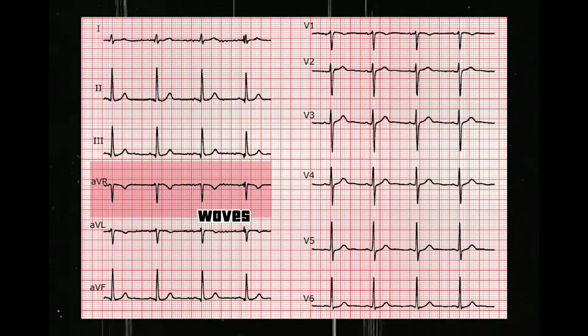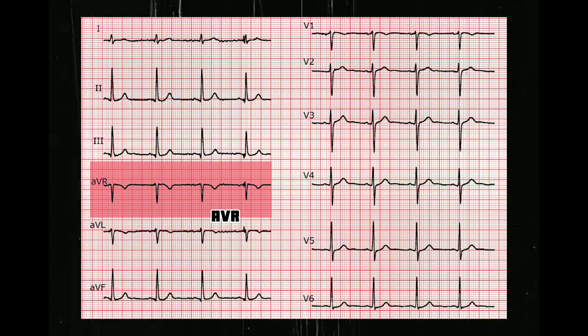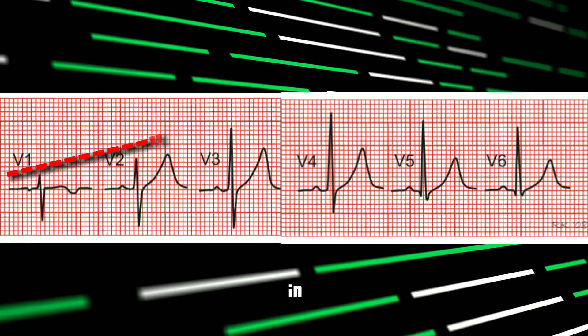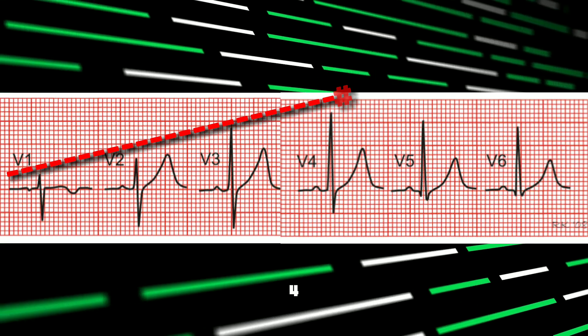Rule number 5: all waves are negative in lead AVR. Rule number 6: the R wave must increase in size from V1 to at least V4.